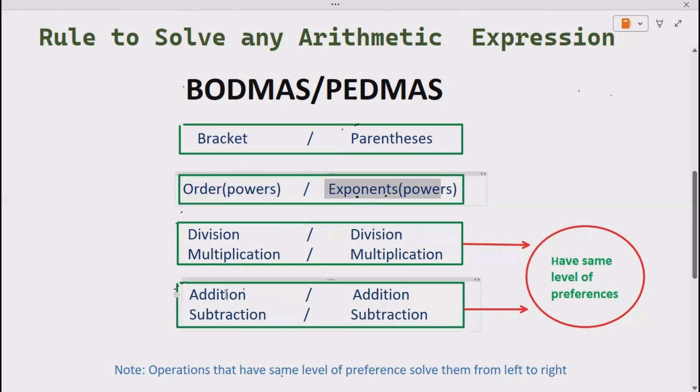And then addition, subtraction. Remember, division-multiplication and addition-subtraction have same level of preference. What does it mean? It means whenever you are solving an arithmetic expression and division-multiplication are both present at the same time, solve that operation first that comes first going from left to right.